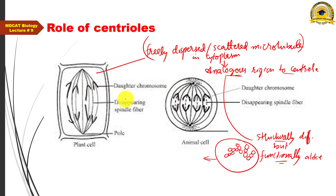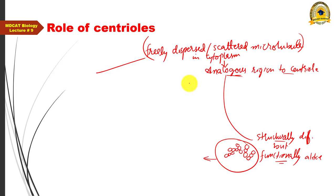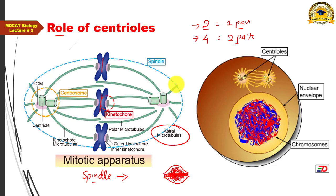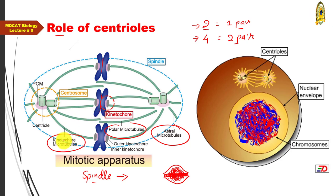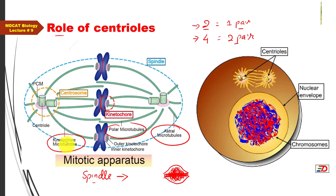The mitotic apparatus of animal cells and plant cells also differs in structure. The animal cell mitotic apparatus consists of three types of microtubules: astral microtubules (present only at the poles, forming a star-like aster), polar microtubules (extending from one pole to the other without interacting with chromosomes), and kinetochore microtubules (extending from one pole to the middle of the cell and attaching to the kinetochore portion of chromosomes at the centromere).